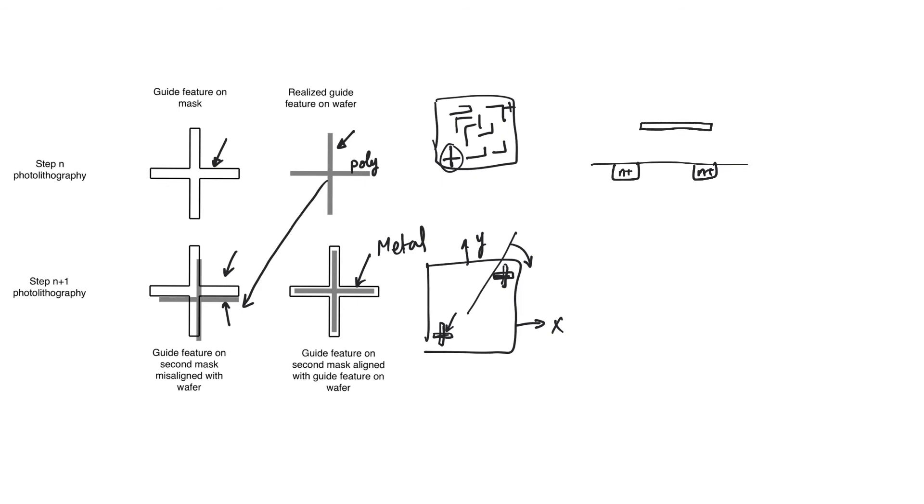So when we look at a fabrication flow, we will discover that we create all the features in a certain layer simultaneously. So we are going to create all the drains and sources in one pass, and then all the gates in another pass.